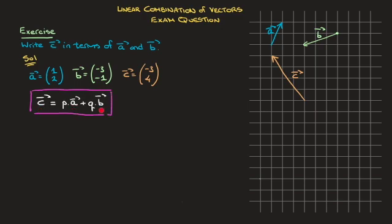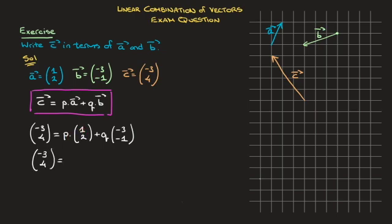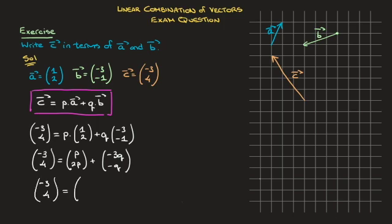Writing C, A, and B in their component form, this turns into (-3, 4) equals P times (1, 2) plus Q times (-3, -1). I now multiply each of the components of the first vector by P, and each of the components of the second vector by Q. So this becomes (-3, 4) equals the vector (P, 2P) plus the vector (-3Q, -Q). Finally, adding the two vectors on the right-hand side, this leads to (-3, 4) equals (P - 3Q, 2P - Q).